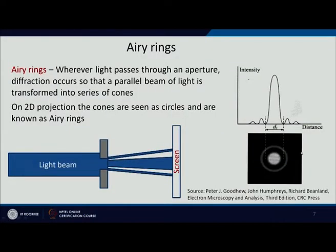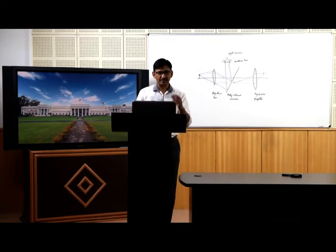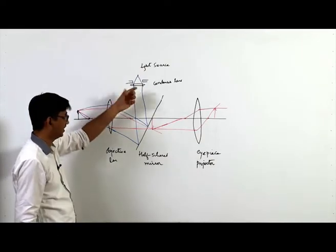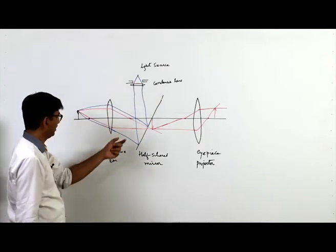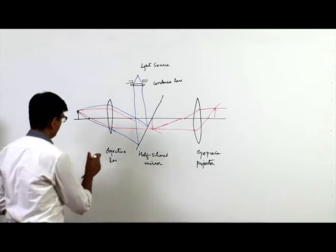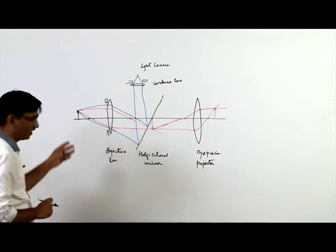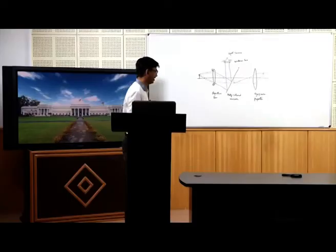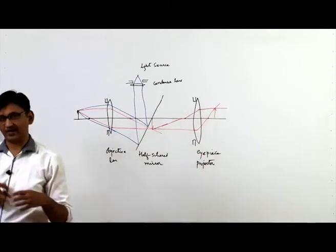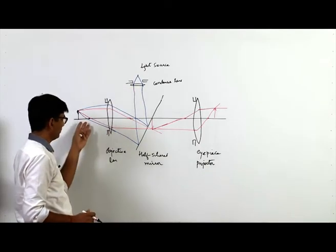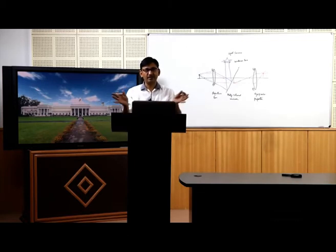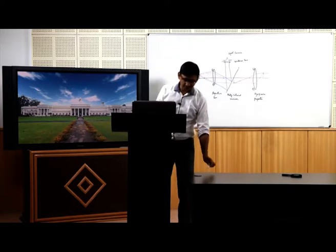So a parallel beam of light going through any opening forms this Airy ring pattern. In the microscope system there is a first aperture at the condenser lens, then after reflection the beam goes through the objective lens aperture, and then through another aperture at the eyepiece. So this light source undergoes Airy ring formation at three places, with the beam dividing into multiple beams at each, which is what reduces the resolution.